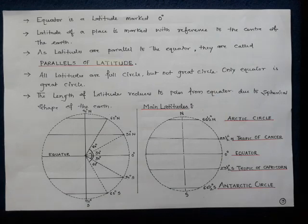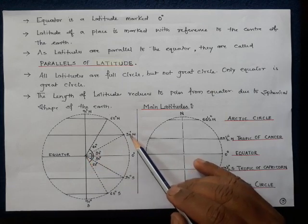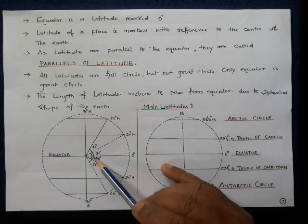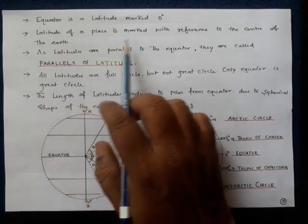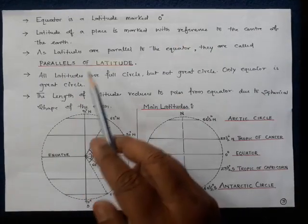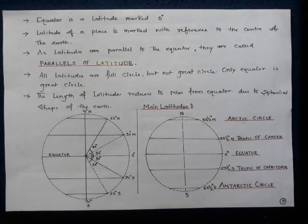The latitude of a place is marked with reference to the center of the earth. For example, 30 degrees north is marked from the equator, 30 degrees from the center of the earth. Since all latitudes are parallel to the equator, they are called parallels of latitude. If there's a question asking why latitudes are called parallels of latitude, the straightforward answer is that they run parallel to the equator, both north and south.